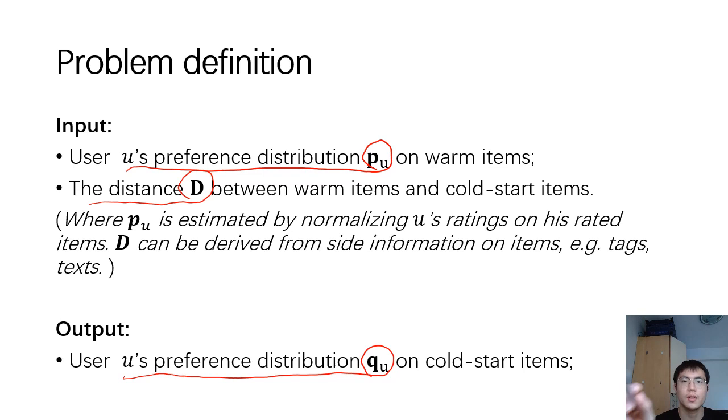The user preference distribution can be estimated by utilizing a user's rating on his rated items. And the distance on items can be derived from side information such as tags and texts on items.